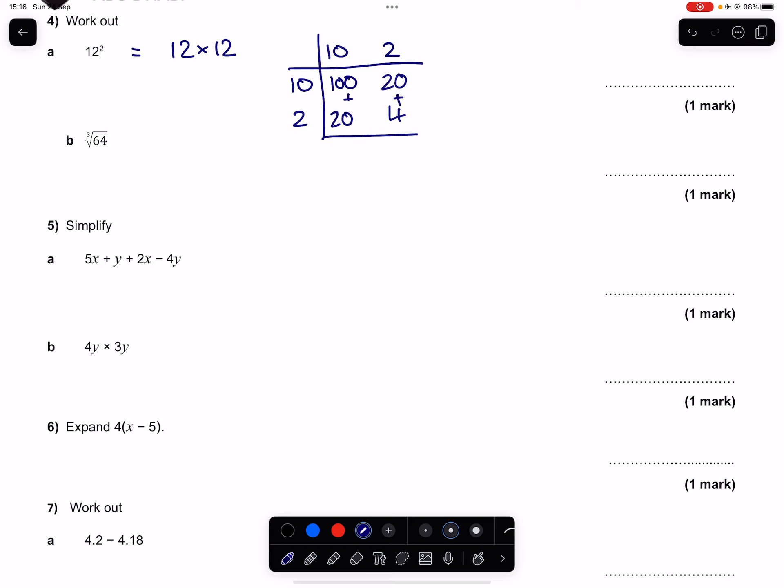We then add all these together. I'm going to add them vertically first. So 100 plus 20 gives us 120. 20 plus 4 is going to give us 24. And if I add those two numbers together I'm going to get 144 which is our answer.